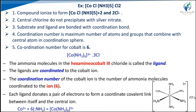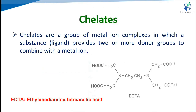In a second example, hexaminecobalt(III), the ammonia molecules act as ligands coordinated to the cobalt ion — [Co(NH₃)₆]. The coordination number of the cobalt ion equals the number of ammonia molecules coordinated to it, which is 6. Each ligand donates a pair of electrons to form a coordinate covalent link between itself and the central ion. The central chlorine ions do not precipitate with silver nitrate.